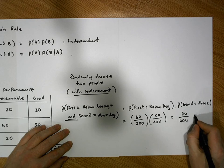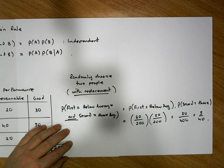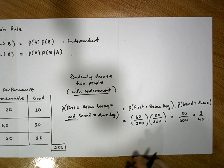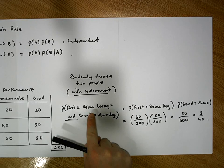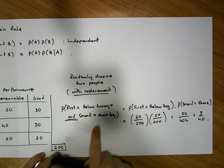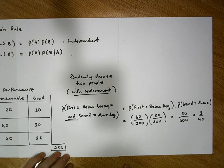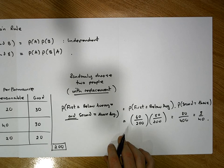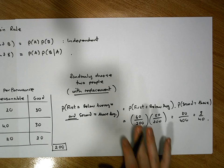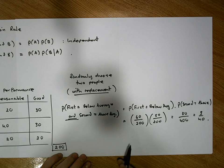That gives us 3000/40000, which simplifies to 3 chances in 40 of selecting two people where the first is below average and the second is above average.